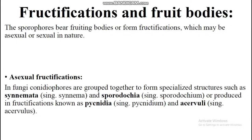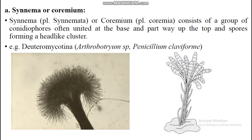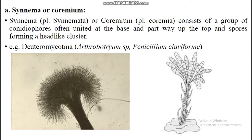The sporophore is the base and spores are at the top, forming a head-like cluster. For example, in deuteromycetes they are larger, erect, and grouped. The conidiophores are compact at the base and conidia are at the top.